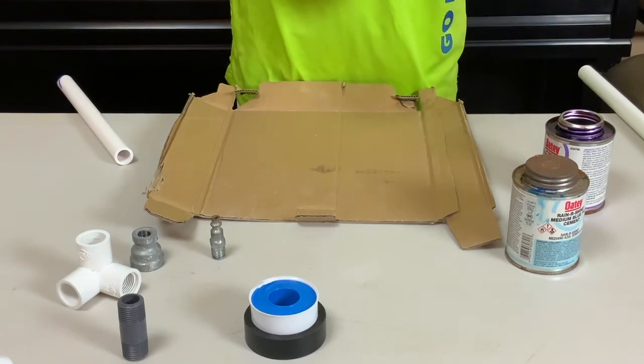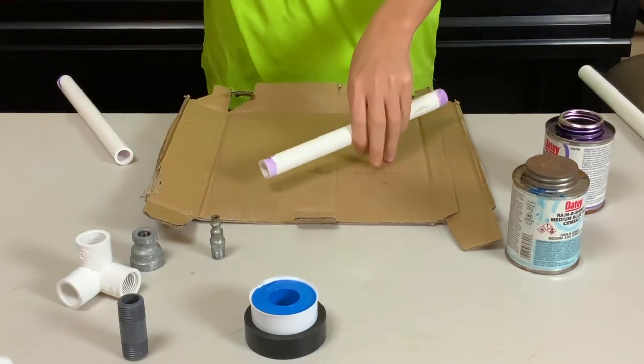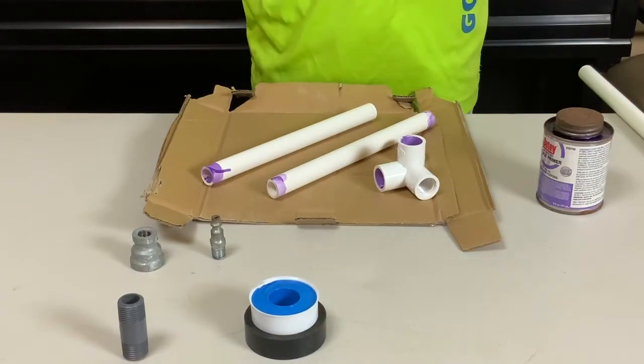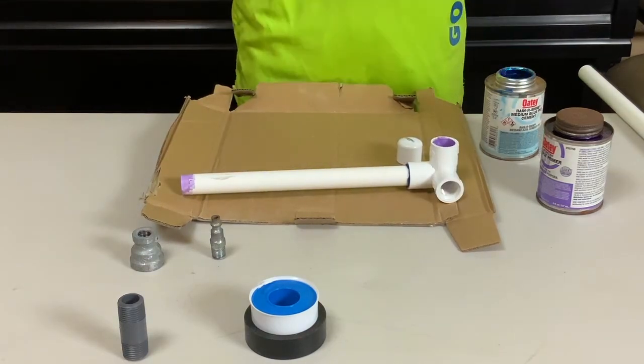Use PVC primer and glue to attach the sections of pipe to the elbow. You will also glue a half inch end cap on one of the sections.